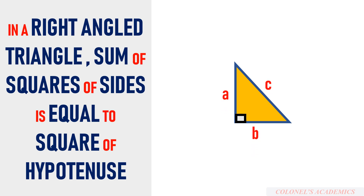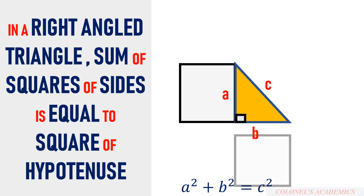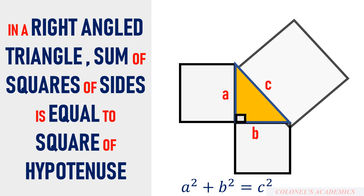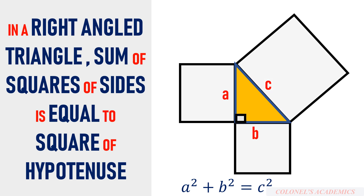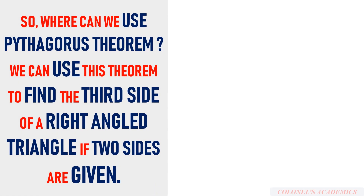The Pythagorean theorem says that a squared plus b squared is equal to c squared. Pictorially, you can see a square and b square — the sum of these two squares is equal to c square.